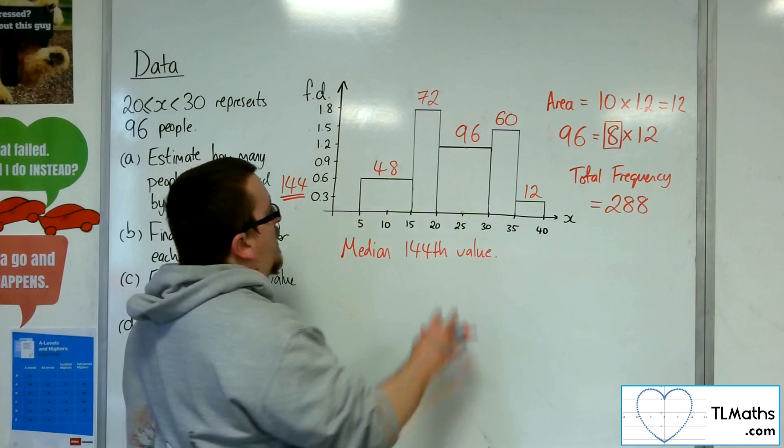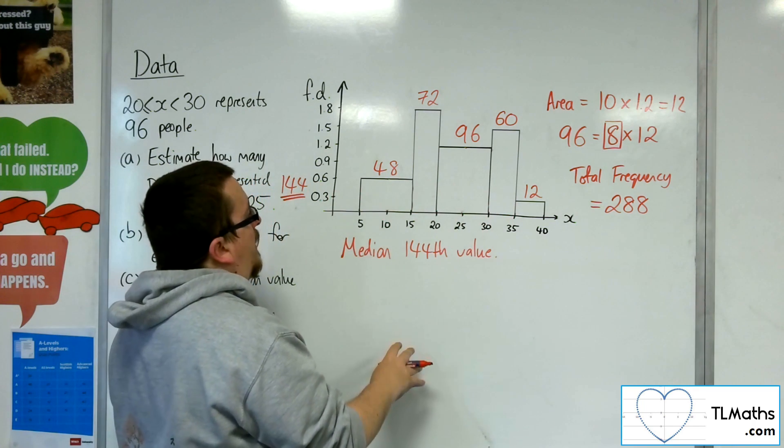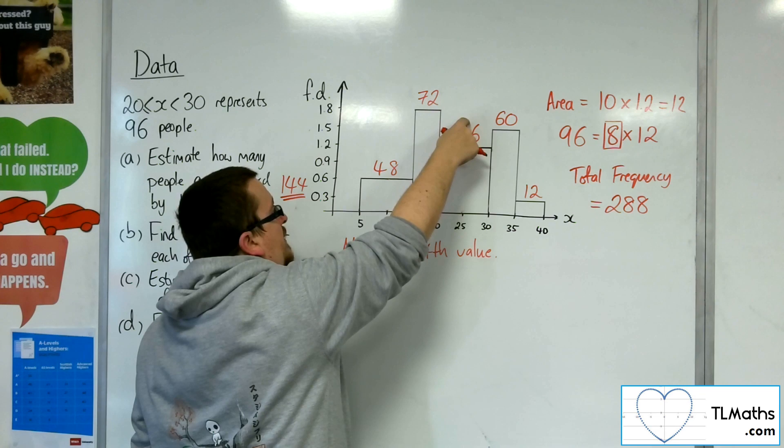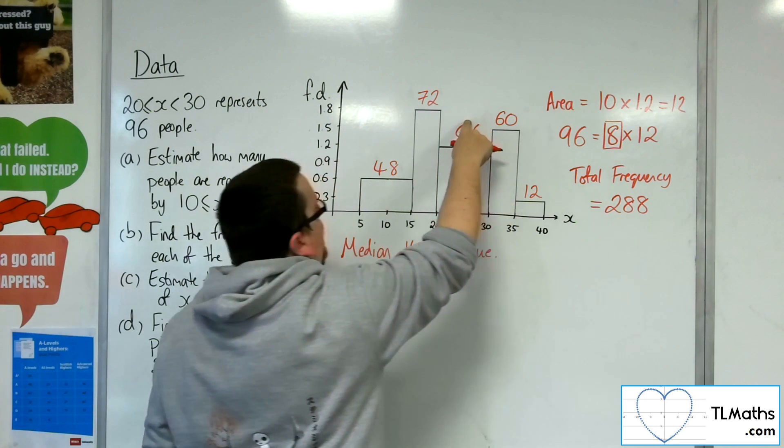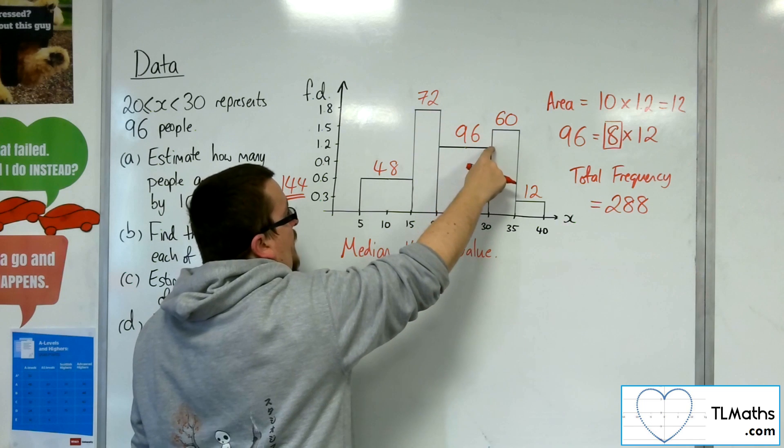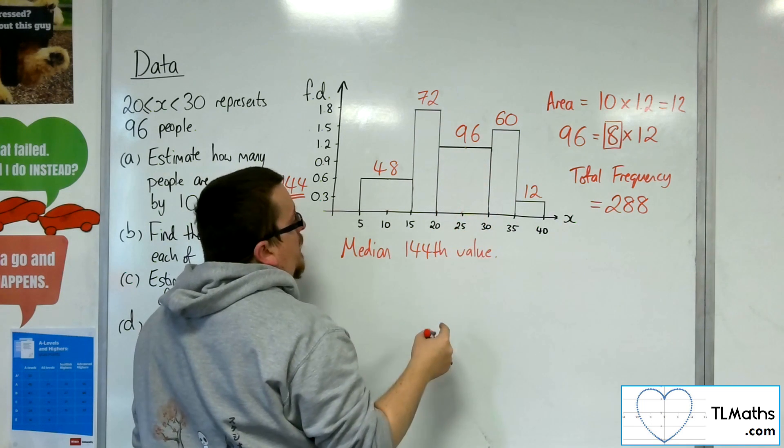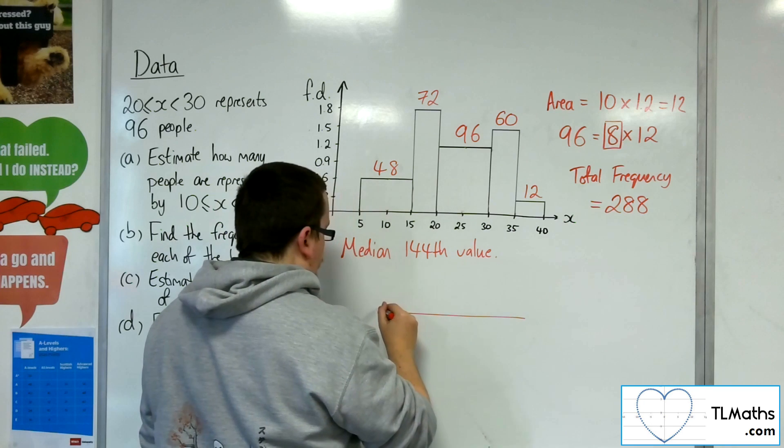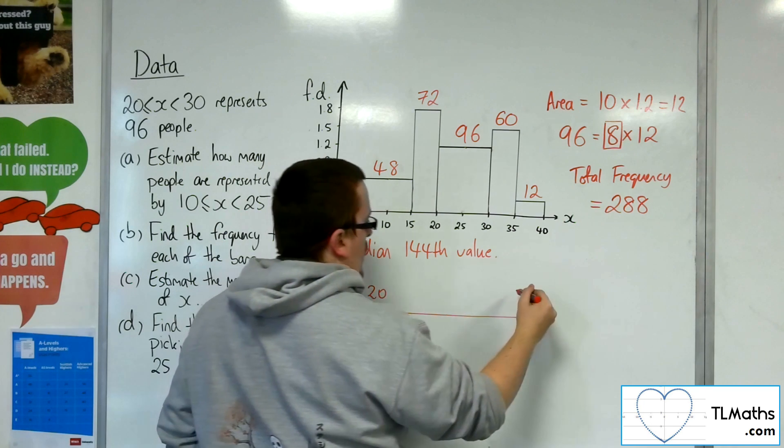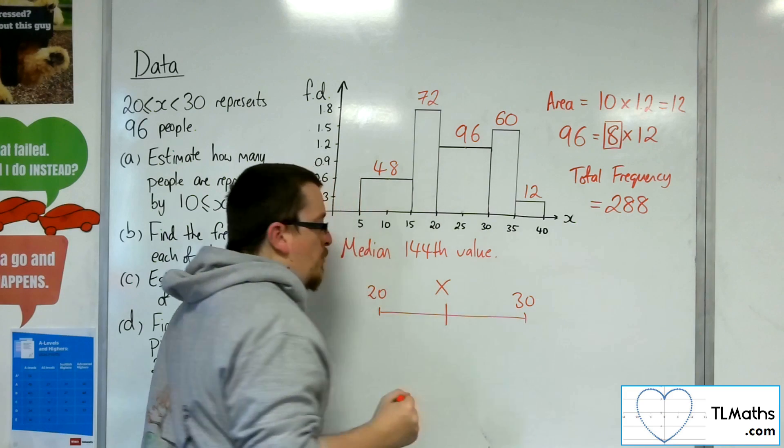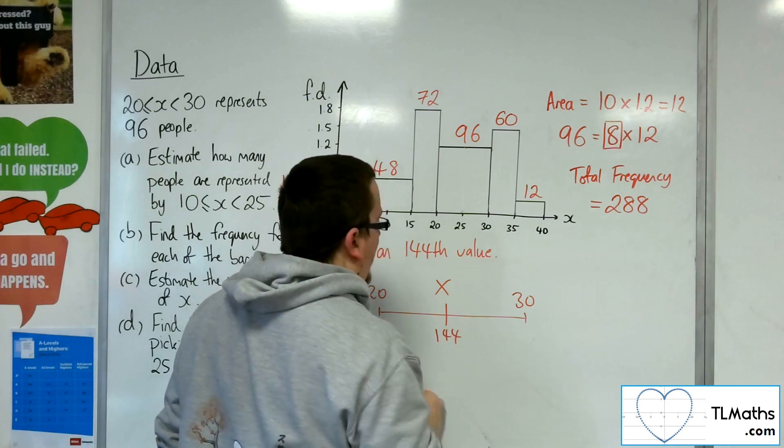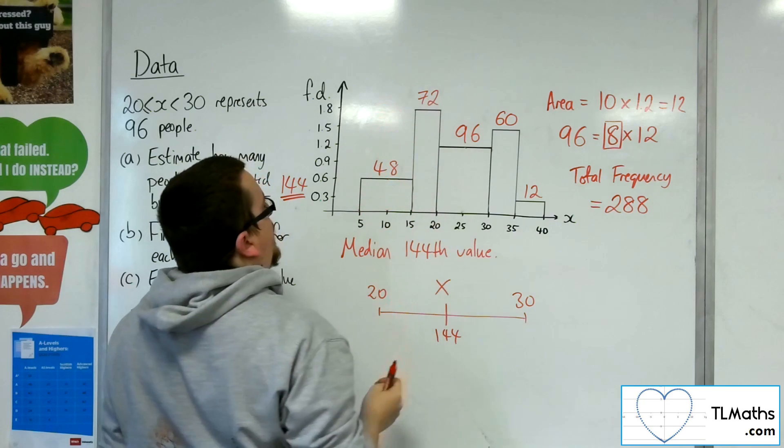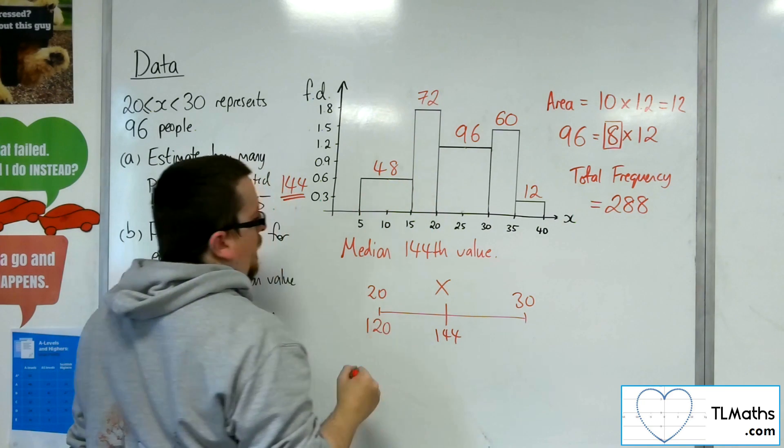I need to work out where the 144th value is going to be, because 48 plus 72 is 120. 120 plus 96 will get me to 216, and so that will get me to the 216th value there at 30. So the 144th value is somewhere in this grouping. If I draw a number line, it is somewhere between 20 and 30. By the time I get to 20, I've gone through 48 plus 72, so 120 values, 120 data points.